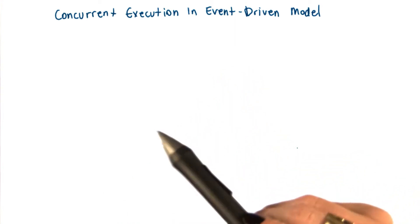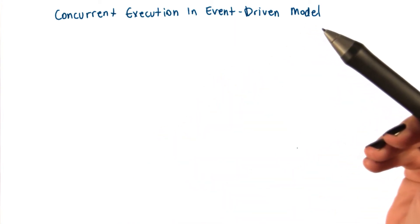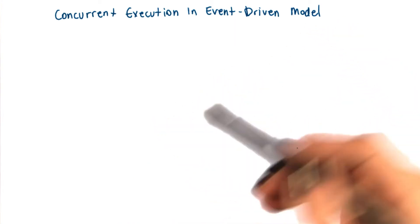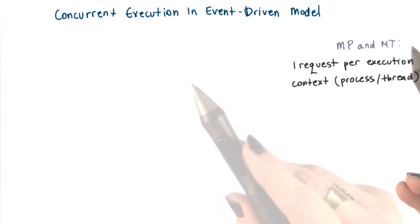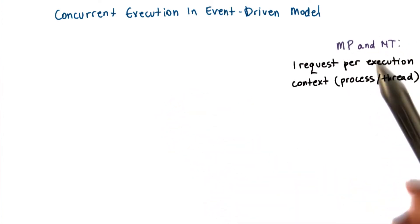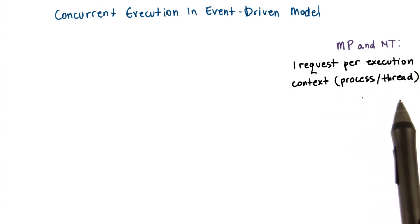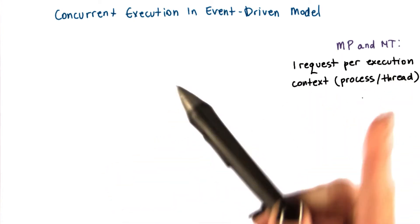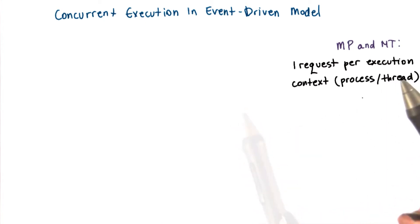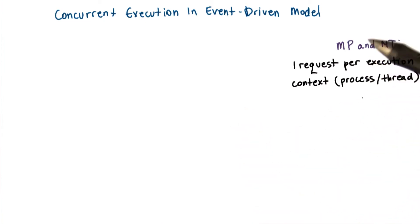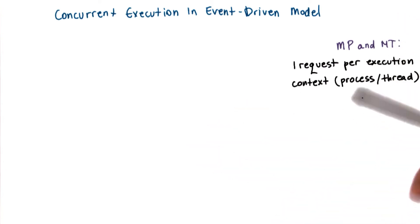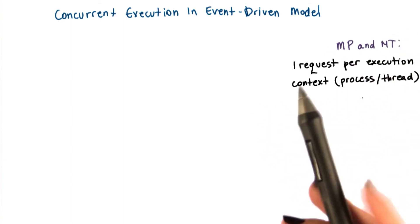You're probably asking yourselves, if the event-driven model has just one thread, then how do we achieve concurrency? In the multiprocess and the multithreaded models, we had each execution context, whether it's a process or a thread, handle only one request at a time. To achieve concurrency, we would simply add multiple execution contexts — multiple processes or multiple threads — and if necessary, if we have fewer CPUs than contexts, then we would have to context switch among them.